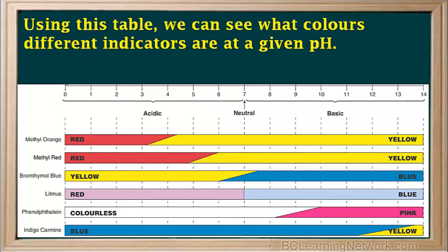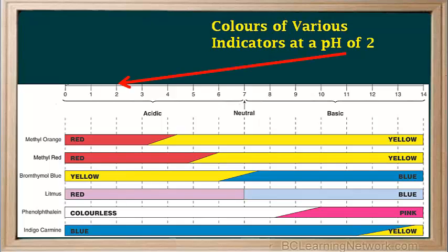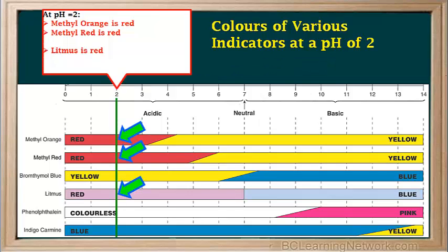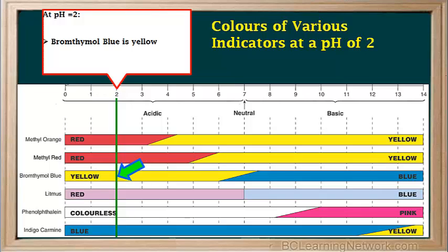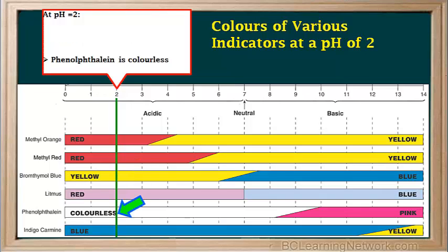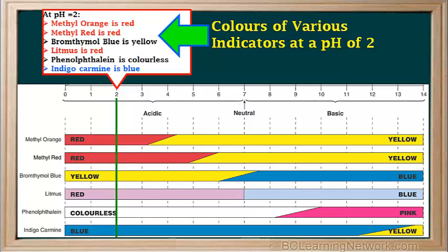Using this table, we can see what colors different indicators are at a given pH. For example, let's find the colors of all the indicators at a pH of 2. If we draw a line through the chart at pH 2, we can see that methyl orange, methyl red, and litmus would be red. Bromothymol blue would be yellow. Phenolphthalein would be yellow. And indigo carmine would be blue.